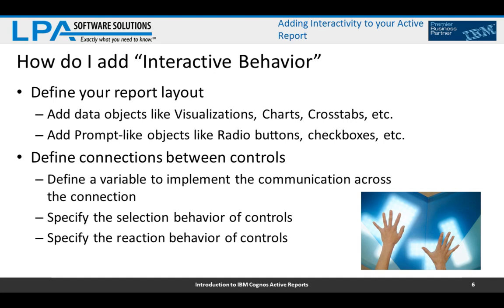How do you add interactive behavior? After your report is laid out with data objects, radio buttons, checkboxes, and other controls, you define connections between those controls. For example, a list connected to a chart: when I click on the list, it presents new data in the chart matching what I clicked. This is implemented by creating a variable — the list sets the variable to the product line clicked, and the chart filters to show data matching that variable value. That is the key to the whole thing: controls set variables, and other controls react to those settings.